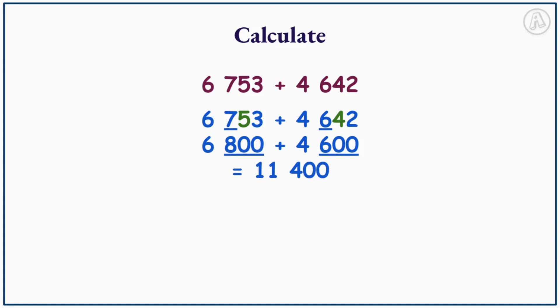We can see our estimated answer is 11,400 and 6,753 plus 4,642 equals 11,395. This is the same answer we got when we corrected our estimated answer by compensating our total errors.